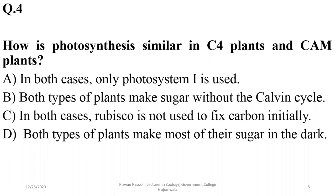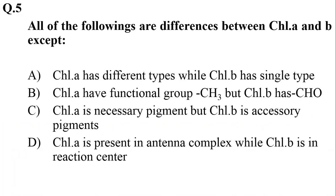In both cases, only photosystem one is used — this is not correct. Both types of plants make sugar without the Calvin cycle — no, that doesn't happen. In both cases, Rubisco is not used to fix carbon initially — yes, that is the right answer. Both types of plants make most of their sugar in the dark — this is not correct. So we prefer option C: in both cases Rubisco is not used to fix carbon initially.